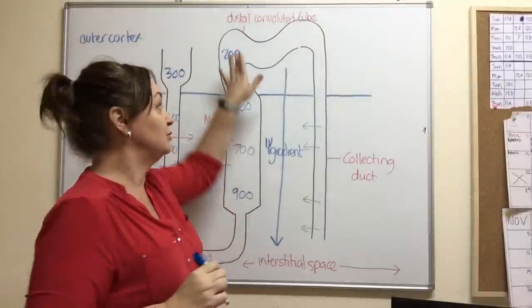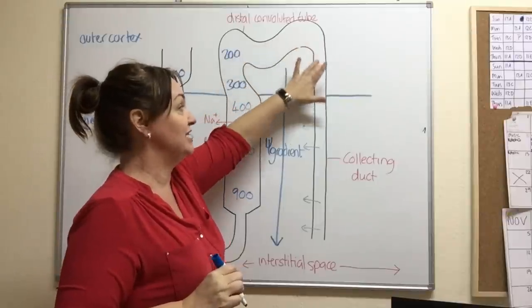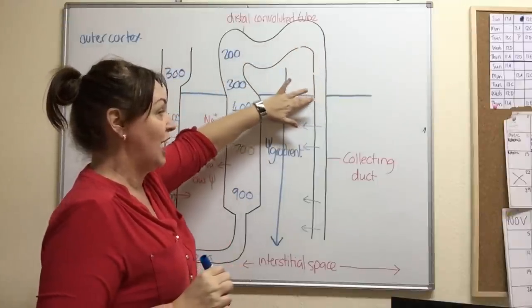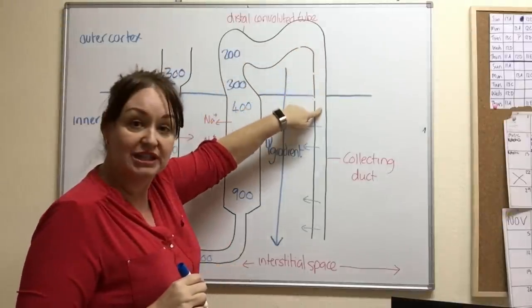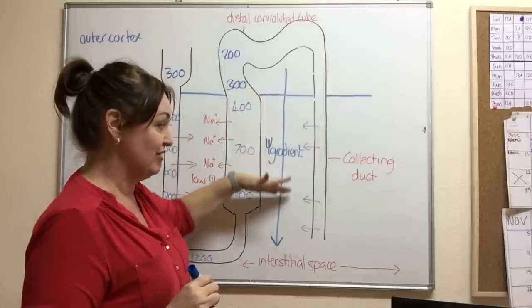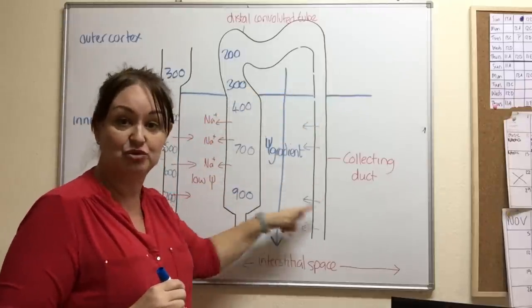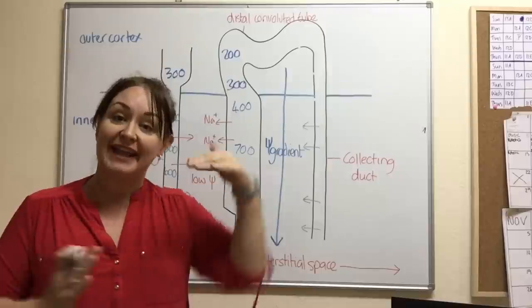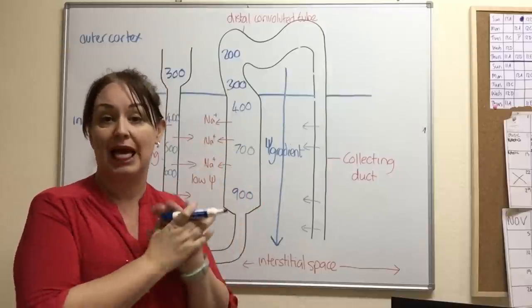So as this filtrate moves down here, it's going to move out and it will become more concentrated as it passes down this tubule. But what's going to happen is this gradient ensures it continues to move. So we call this the counter current multiplier system.